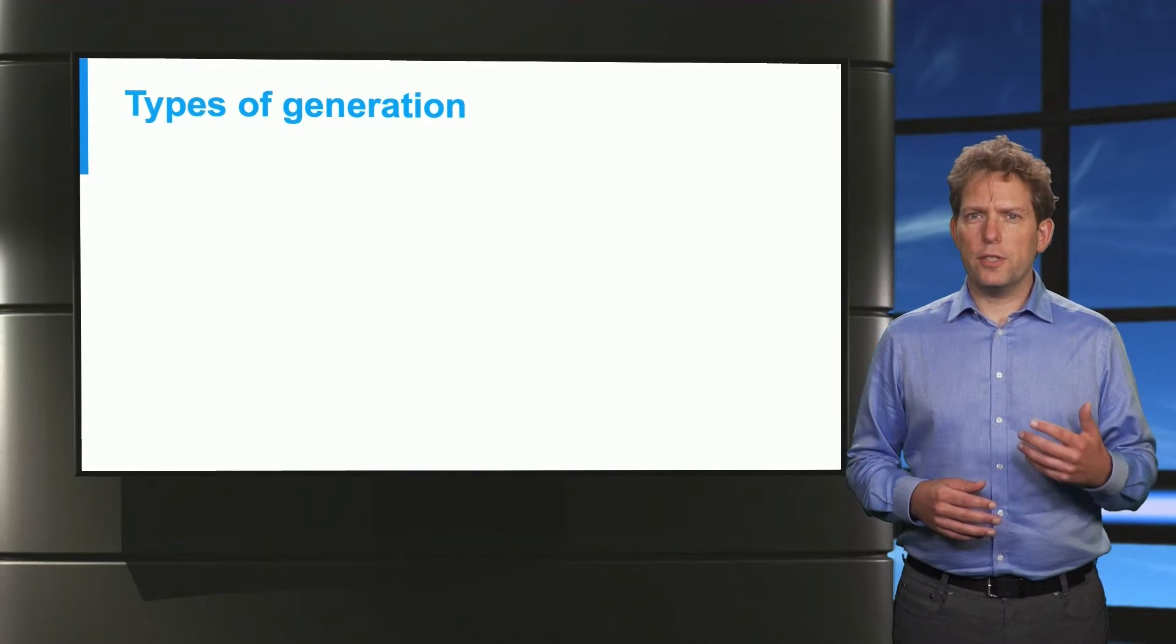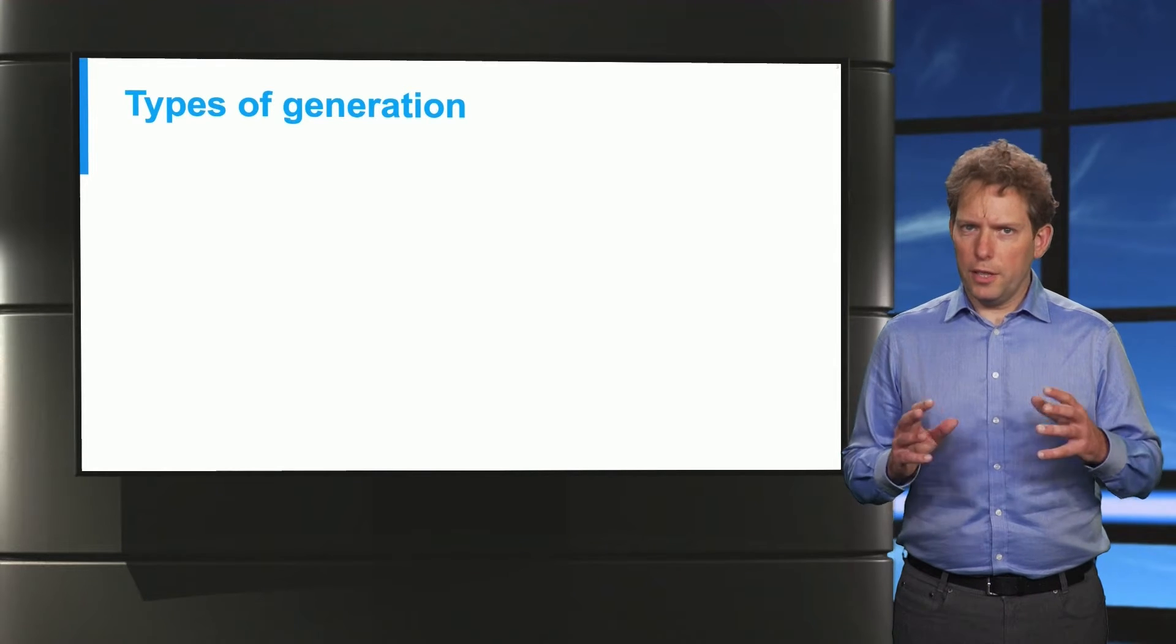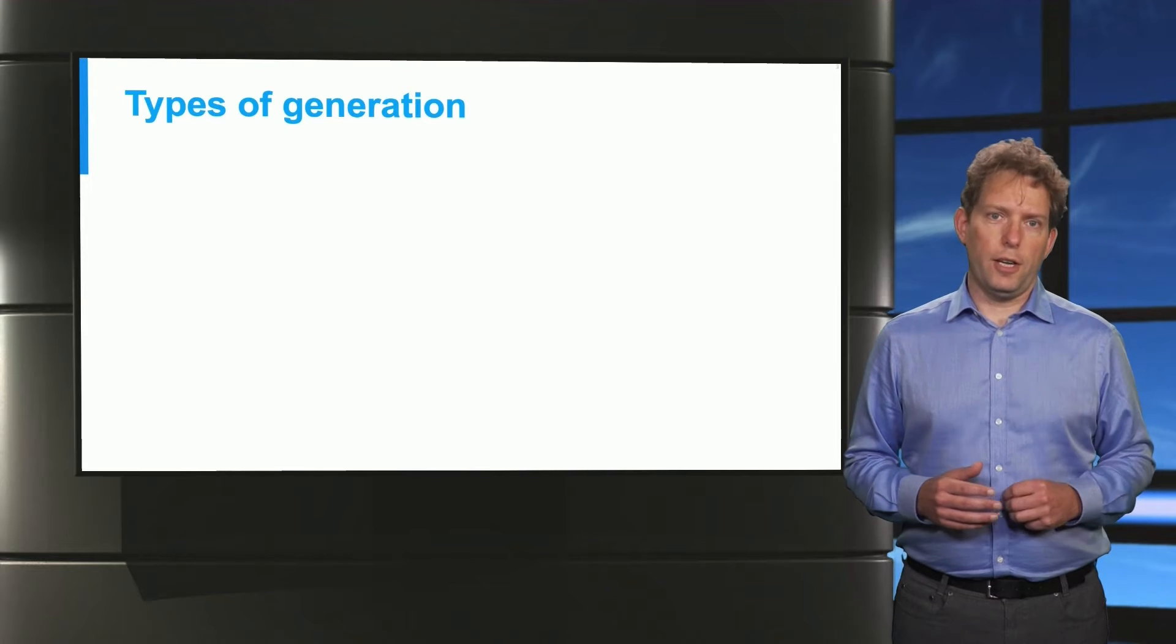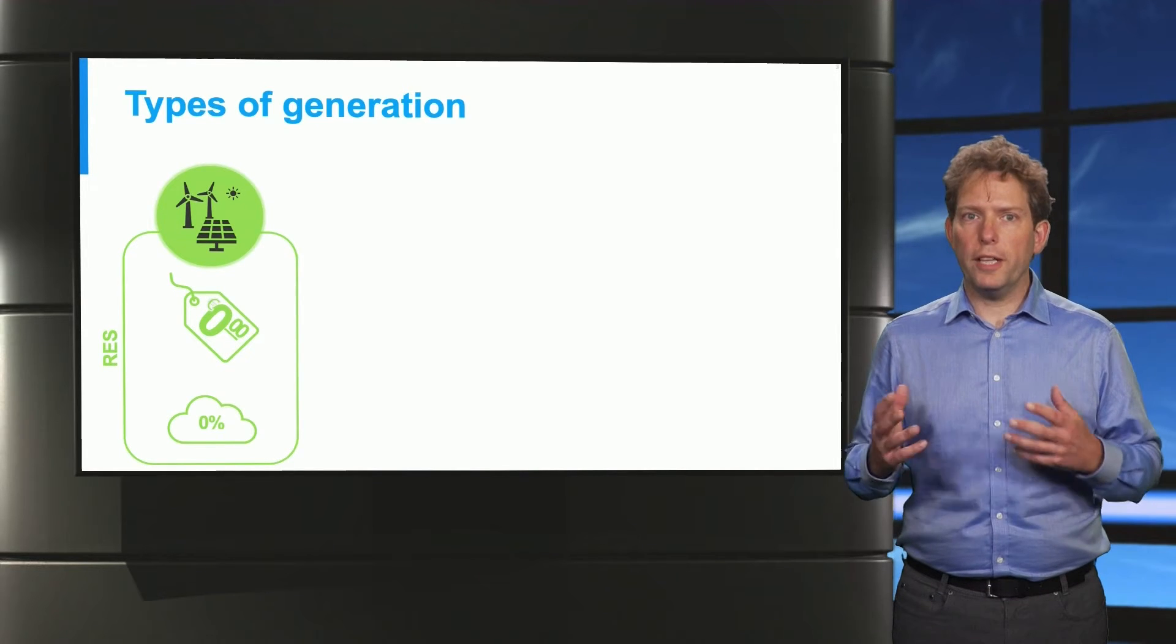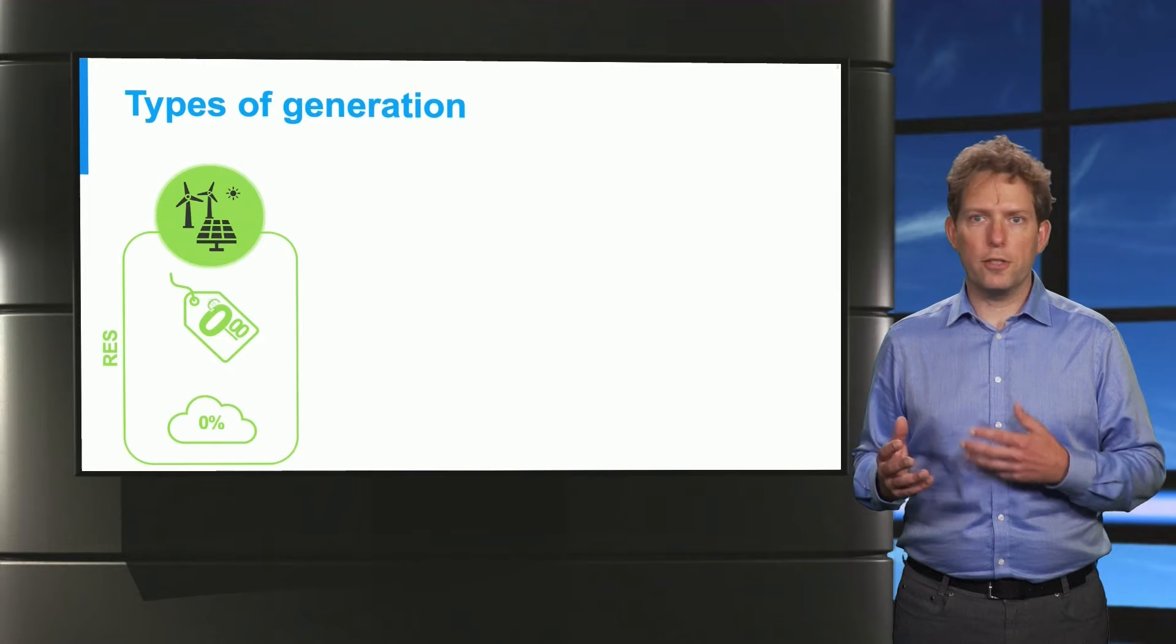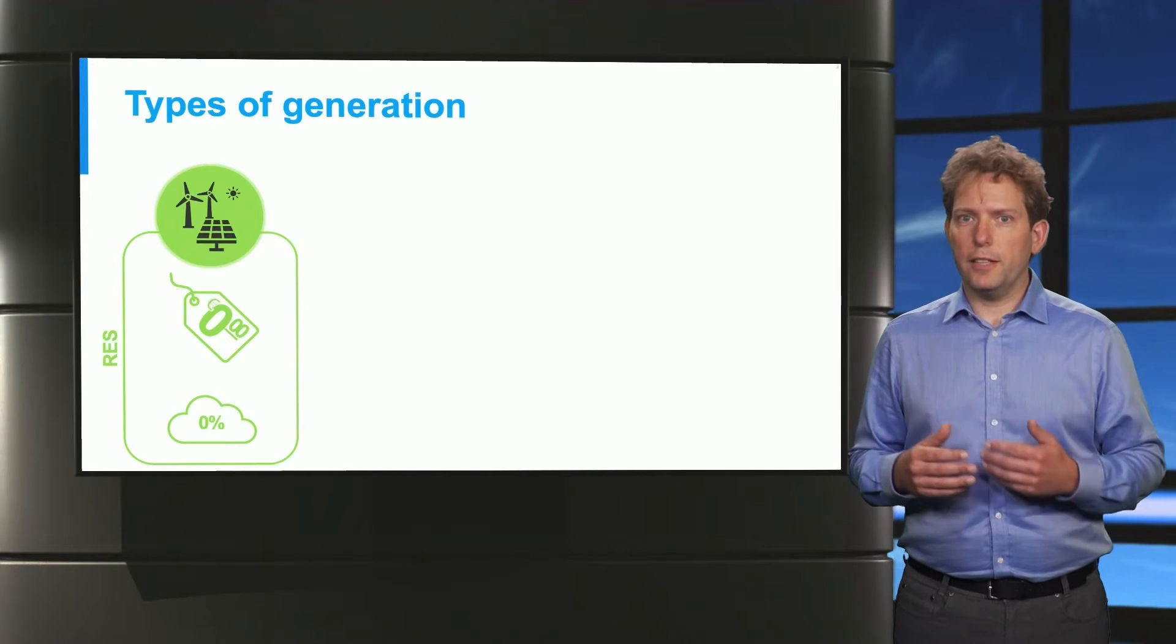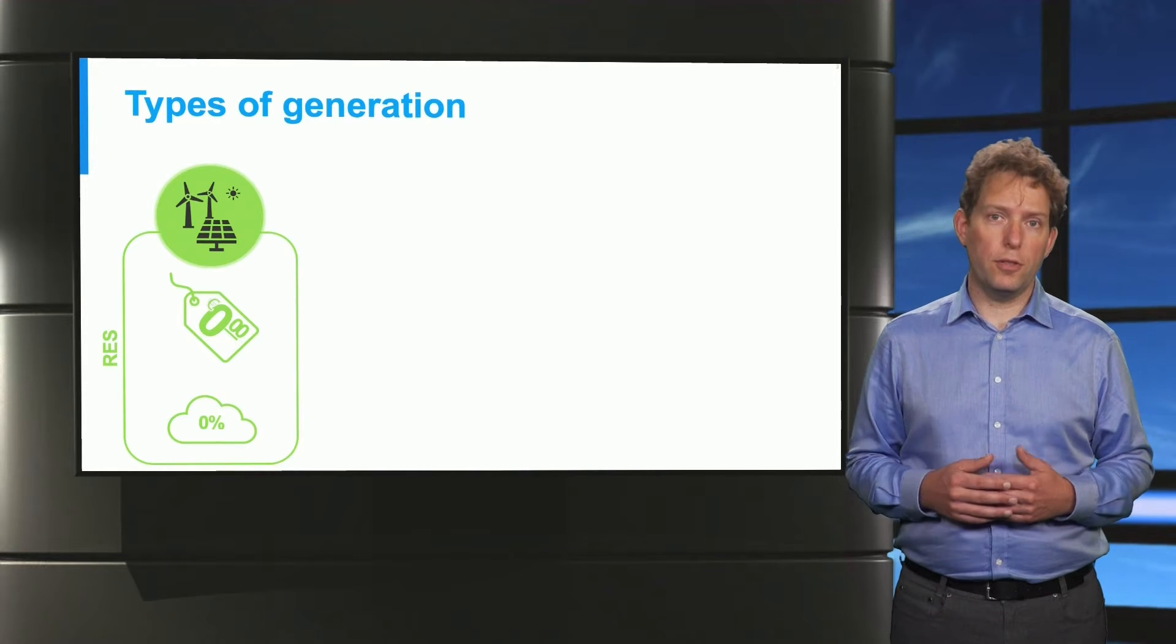In real energy systems there are many types of units generating energy. In this short video I will illustrate the concept using only three different types. First, I consider renewable energy sources, such as wind and solar. Once we've built them, the cost of generating energy is effectively zero, and there are no CO2 emissions to worry about.